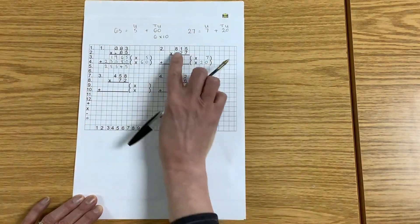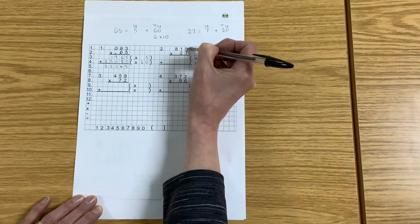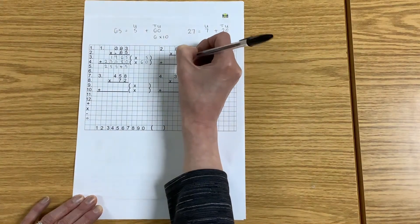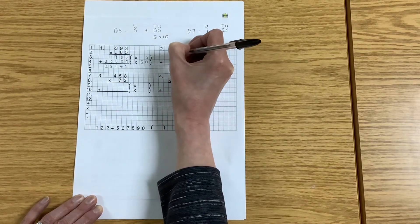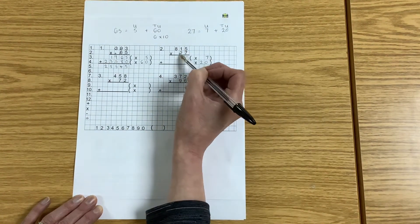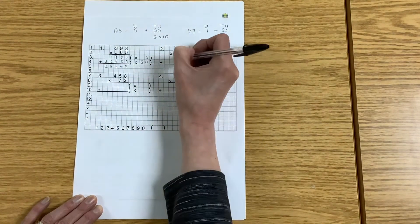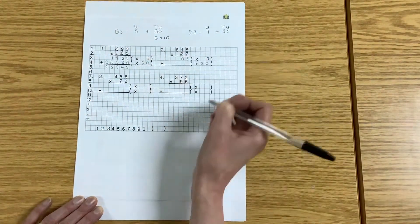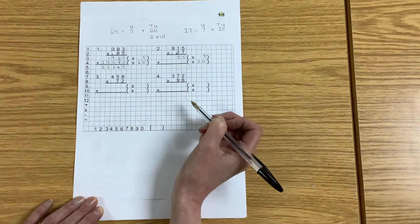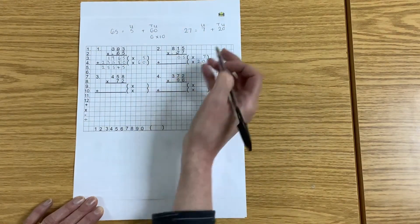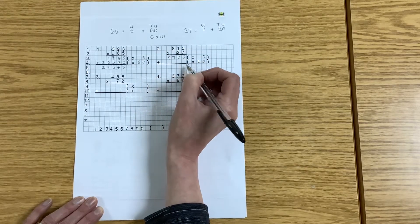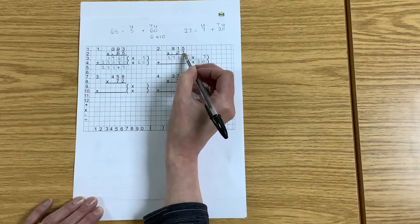Let's ignore the 2 and do 815 times 7. So 7 fives are 35, put down the 5, carry the little 3. 7 ones are 7, add 3 more is 10. Put down your 0 and carry the 1. 7 times 8, 7 eights are 56, and one more 57. 5,705. I've multiplied by my 7.